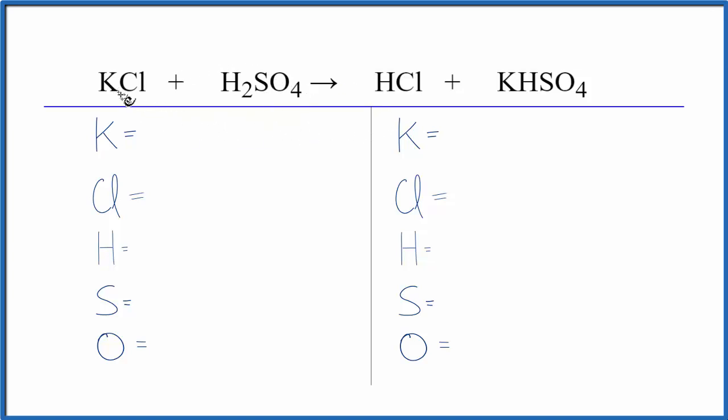Let's count the atoms up on each side. We have one potassium, one chlorine, two hydrogens, one sulfur, and then four oxygen atoms.